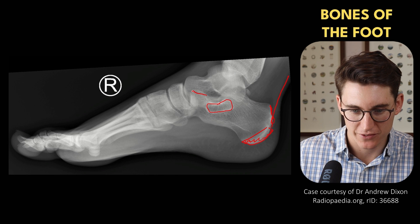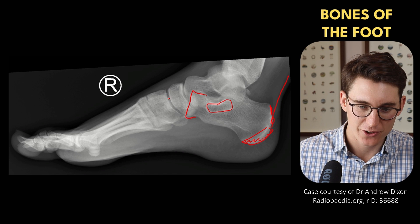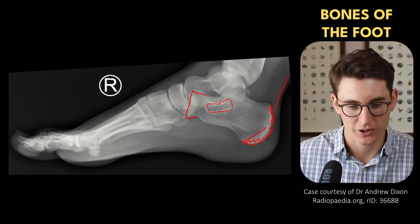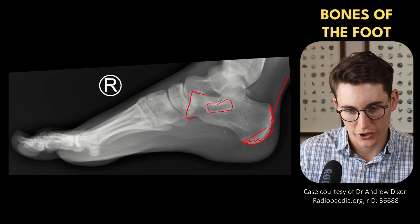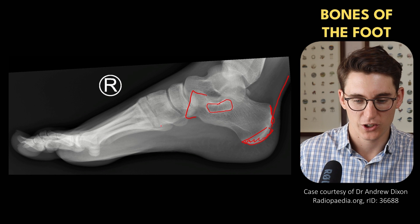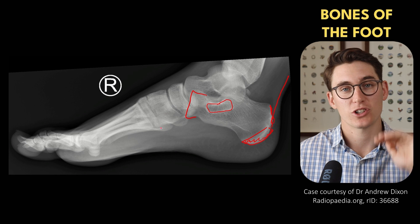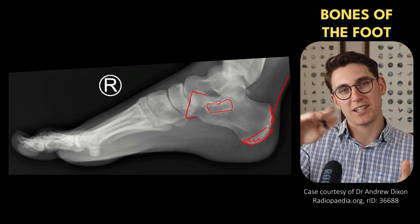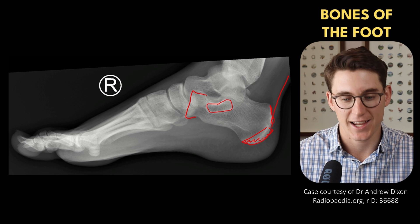We've got an anterior process of the calcaneus that articulates with our cuboid bone. Anterior to the navicular bone and medial to the cuboid bone are our three cuneiform bones, which are quite difficult to appreciate here. We can see our metatarsals and our sesamoid bones, and we can draw an arch that runs along the longitudinal aspect of the foot known as our longitudinal arch — both a medial and lateral longitudinal arch. You can also see a transverse arch drawn across the Lisfranc joint through the medial, intermediate, and lateral cuneiforms as well as the cuboid bone, providing stability laterally to the foot.